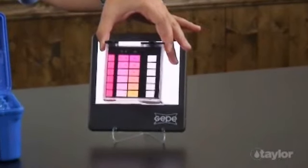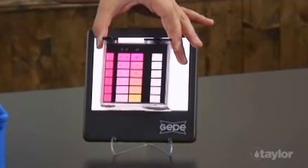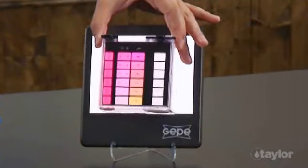When the color match appears to be 10 parts per million or darker, the sample should be diluted and a second test performed.